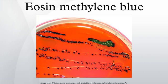Eosin-methylene blue (EMB) is a selective stain for gram-negative bacteria. EMB medium contains dyes that are toxic for gram-positive bacteria and bile salt which is toxic for gram-negative bacteria other than coliforms. EMB is the selective and differential medium for coliforms.